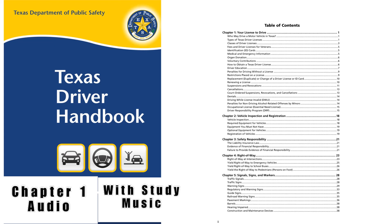Minimum age requirements: Motorcycle – 16 years of age with completion of the classroom phase of a driver education course (32 hours) and a DPS-approved motorcycle operator training course (16 hours). Moped – 15 years of age with completion of the classroom phase of a driver education course (32 hours) and a DPS-approved motorcycle operator training course (16 hours). Motor-driven cycle of 250 cc or less – 15 years of age with DPS approval for a hardship driver license, or completion of the classroom phase of a driver education course (32 hours) and a DPS-approved motorcycle operator training course (16 hours). For more information on Class M driver licenses, please visit our website.